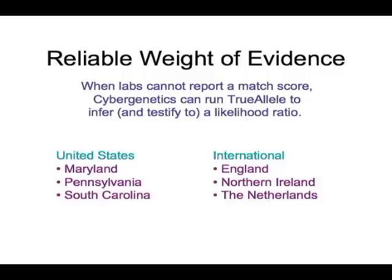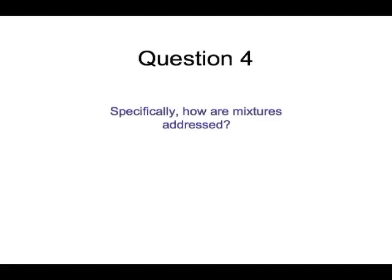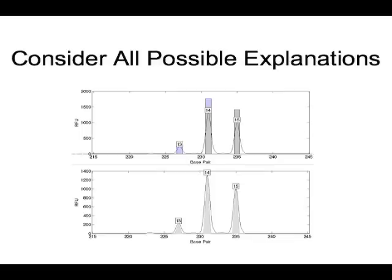For the rest of this talk, the example I'll be using is a Pennsylvania case with some degraded DNA — a two-person mixture. Question four: specifically, how are mixtures addressed? You have some data in green, and in gray is the victim's allele pair from the explain interface. In this one-unknown case, the computer tries out all possible allele pairs, here for example a 13, 14 in different mixing proportions, each time generating a predicted pattern.